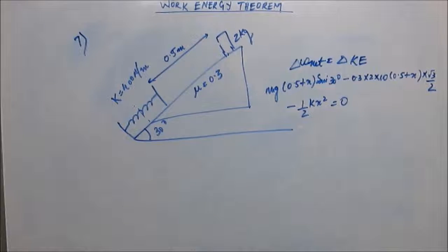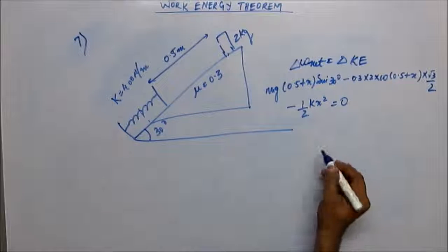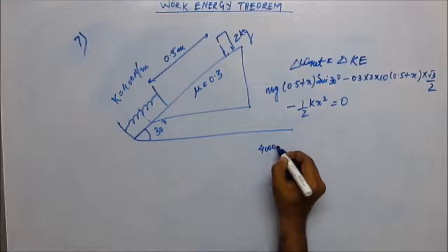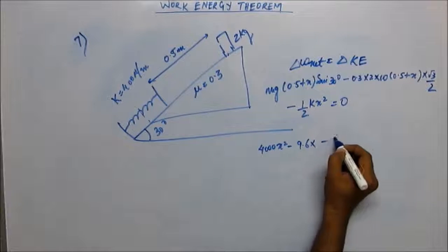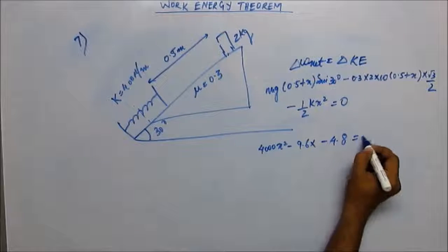You know all the parameters except x and you can easily find out x. If you put the values of different parameters you will come to an equation: 4000x² - 9.6x - 4.8 = 0.